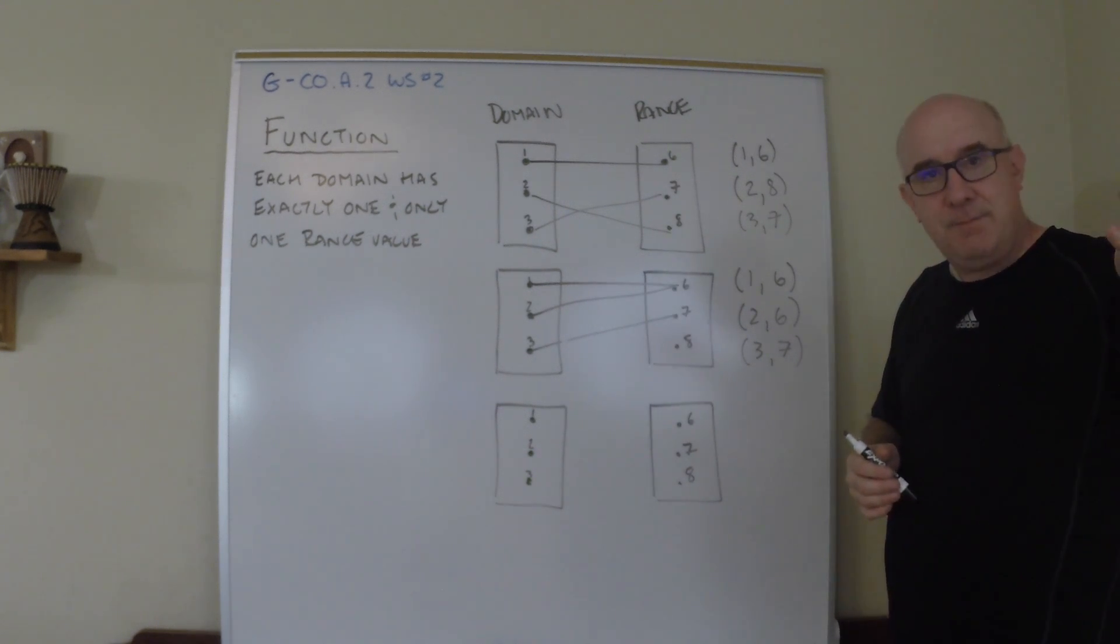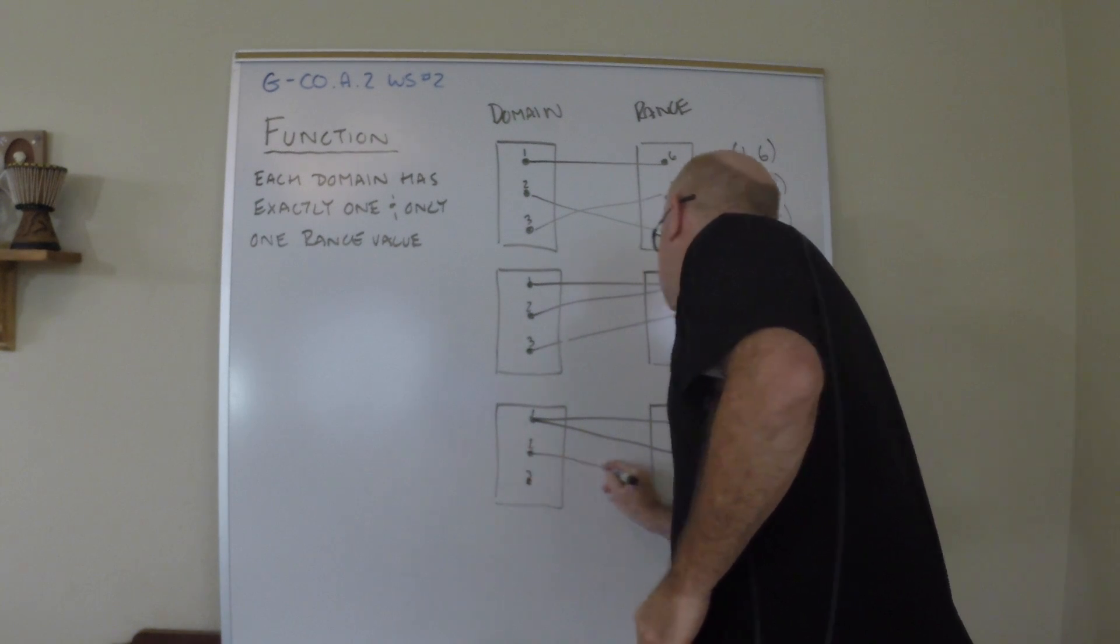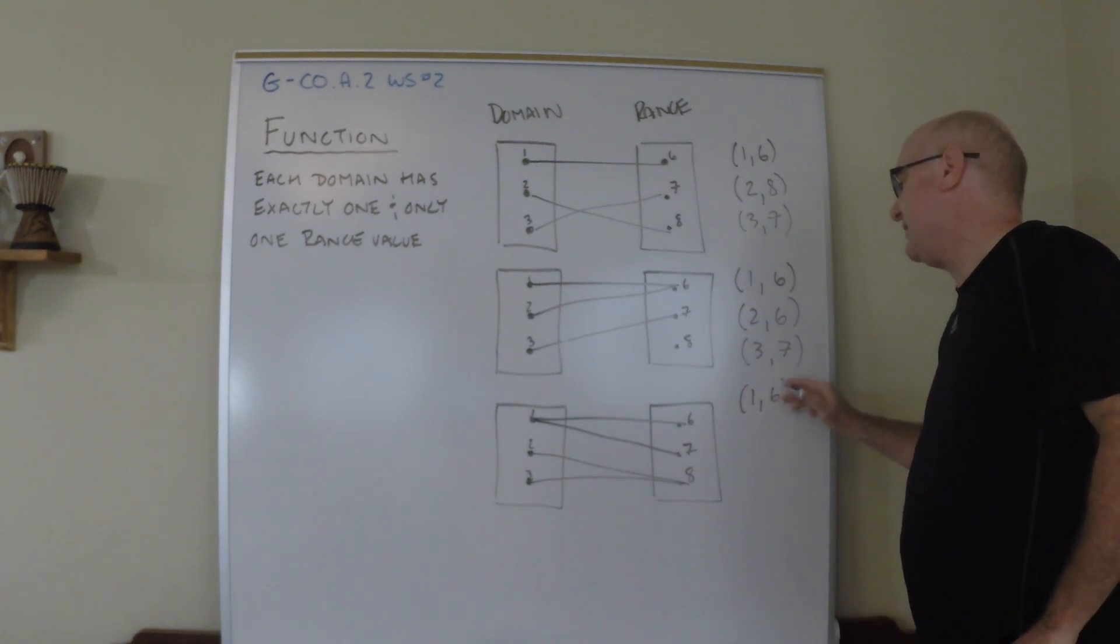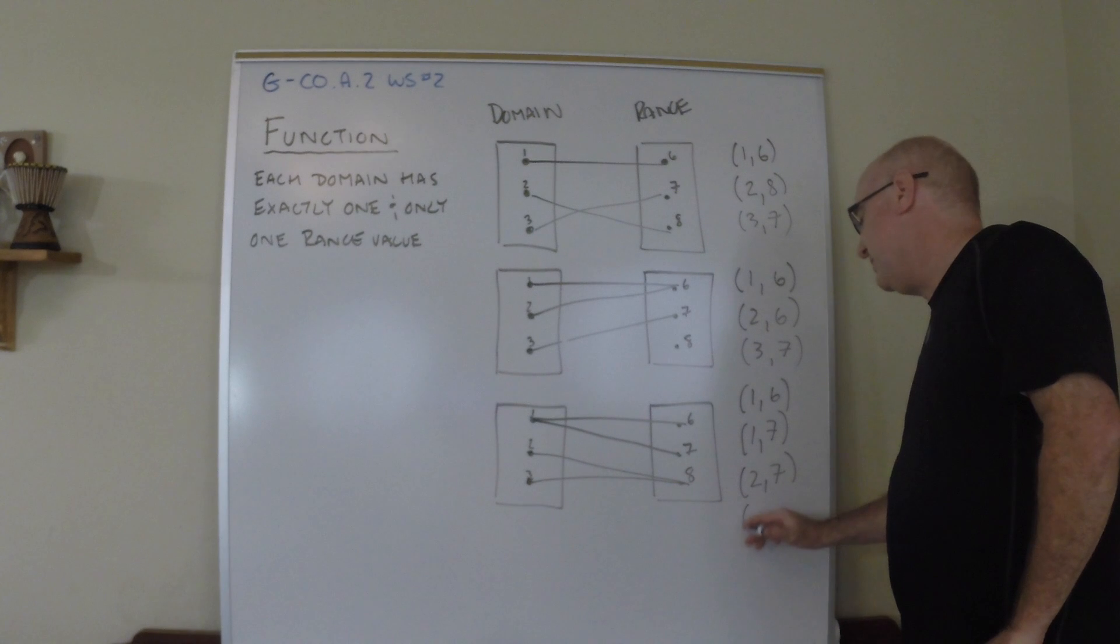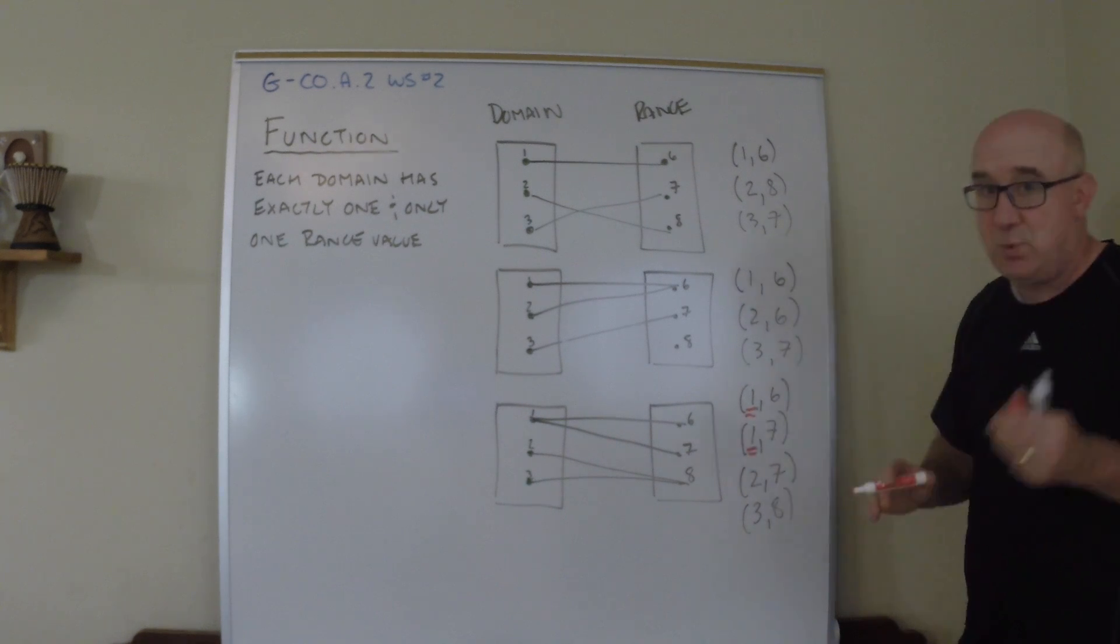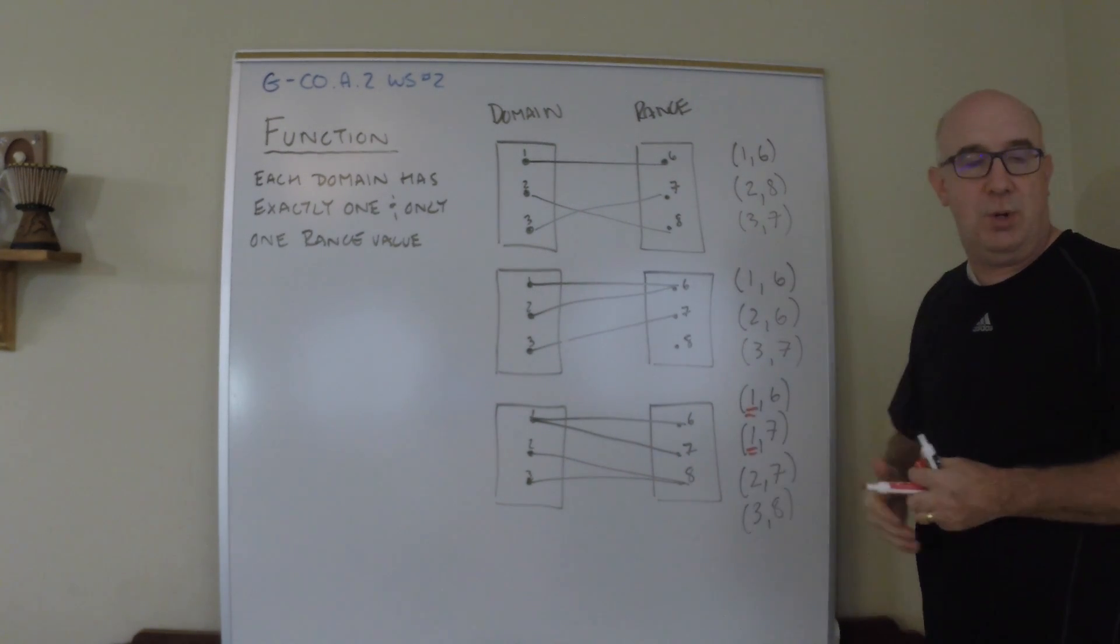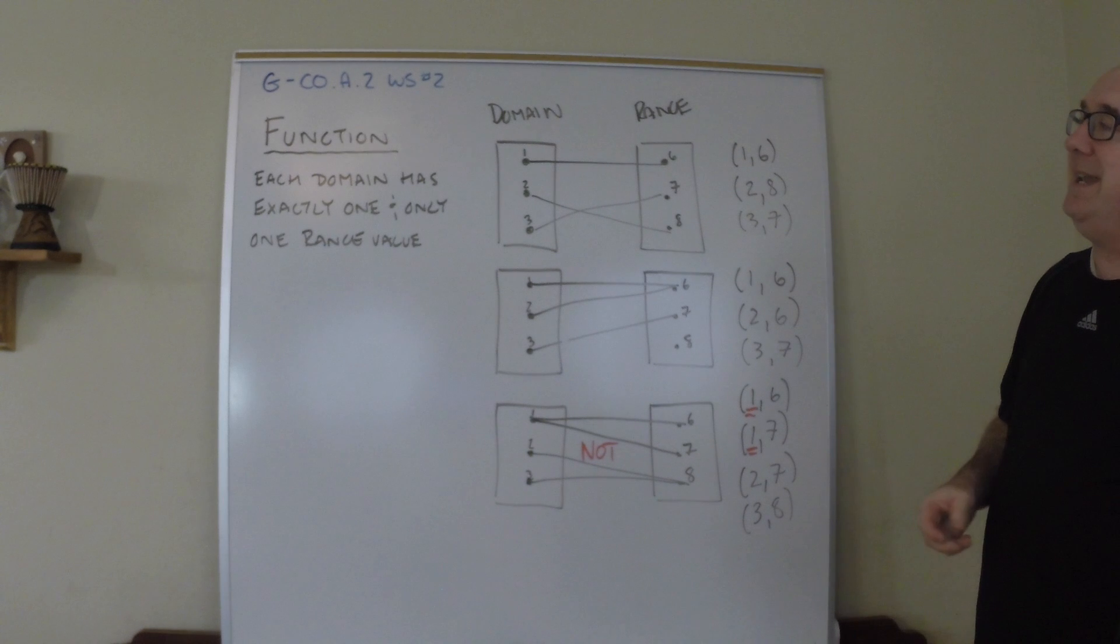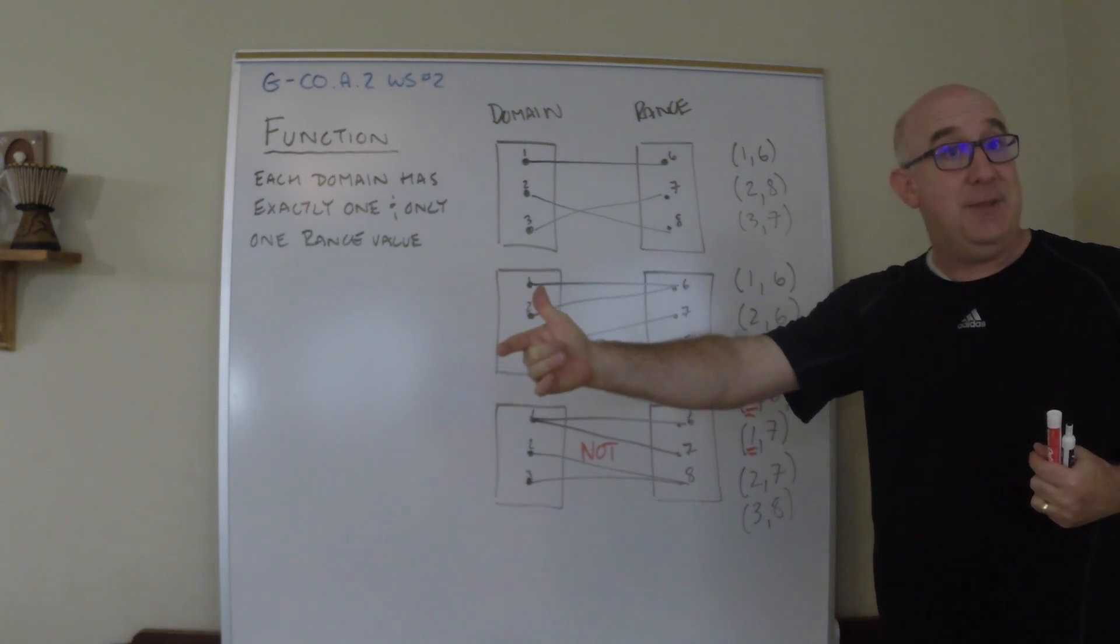Each number here was connected to a number in the y values. So you kind of say, well wait, what can't it be then? So it can't do this. You can't get this world. So let's take a look. One got connected to six and one also got connected to seven. Two went to seven, and three went to eight. Here's the problem: this domain value, these ones, got associated with two values in the range or in the y values. This is not a function.